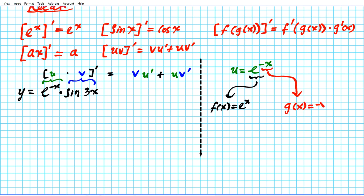g of x is negative x. We differentiate both functions to apply the chain rule. f prime of x, the derivative of e to the x, is just e to the x. Then g prime of x, using the constant multiple rule — if you differentiate a linear function y equals mx plus b, your derivative is simply the coefficient of x, which in this case is negative 1.